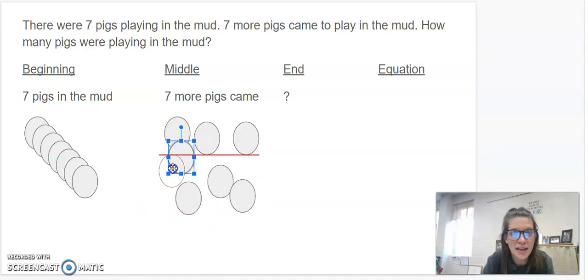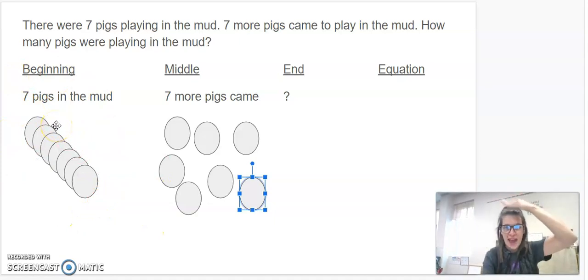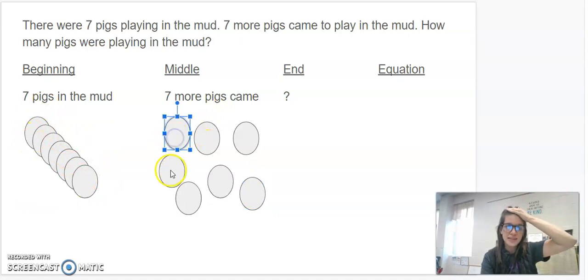Now, I am going to count all the circles together to see how many pigs were playing in the pig pen. Well, I already know this row is seven. So, I'm going to put that in my head, and I'm going to count on as I point to each circle. So, seven, eight, nine, 10, 11, 12, 13, 14.